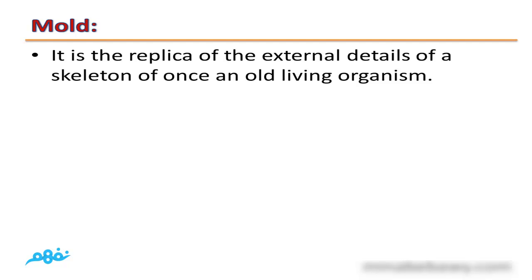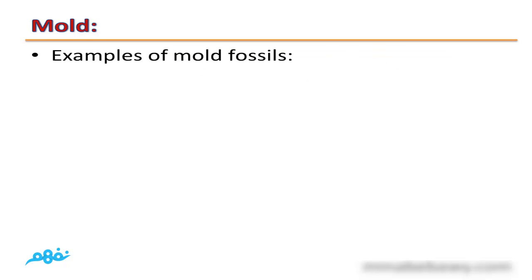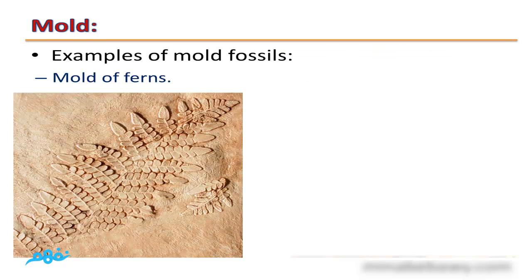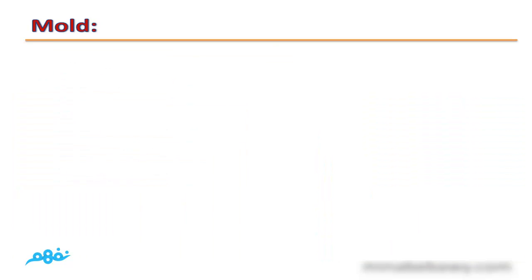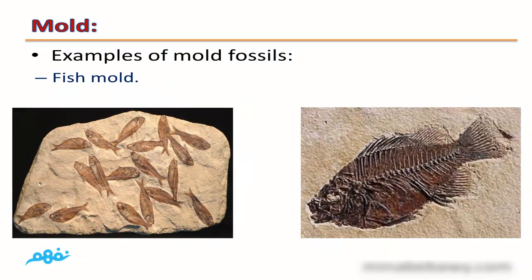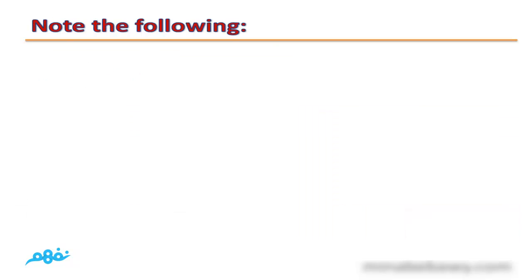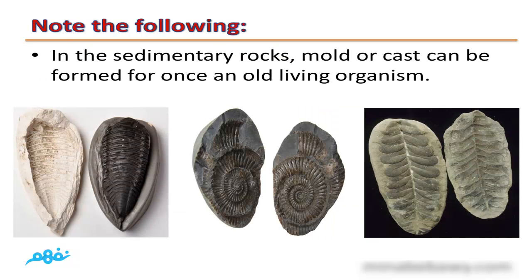Mold: it is the replica of the external details of a skeleton of an old living organism. Examples of mold fossils include mold of ferns and fish mold. Note that in sedimentary rocks, mold or cast can be formed for an old living organism, and mold and cast can be formed together, as seen in these images.